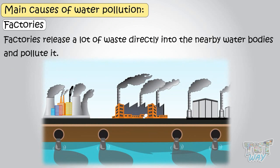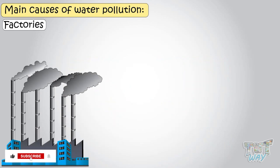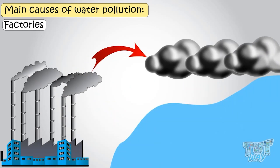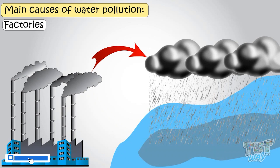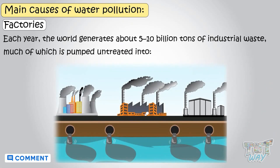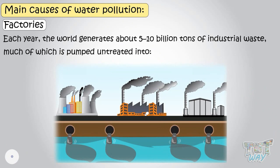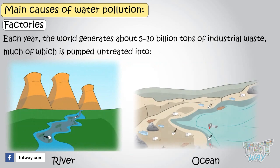Most factories, industries, and manufacturing units release a lot of waste directly into the nearby water bodies and pollute it. Even the smoke released by chimneys of factories reaches the water along with polluted rain, and so pollutes water. Each year, the world generates about perhaps 5 to 10 billion tons of industrial waste, much of which is pumped untreated into rivers, oceans, and other waterways. And it is the main reason behind water pollution.